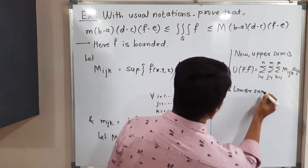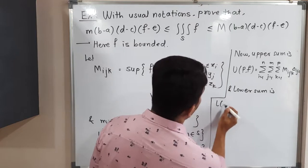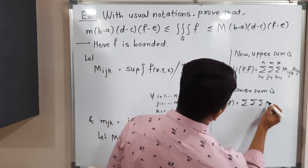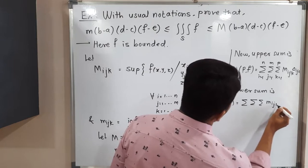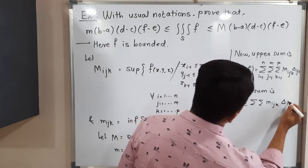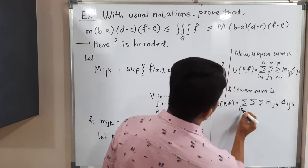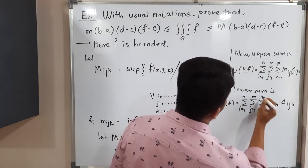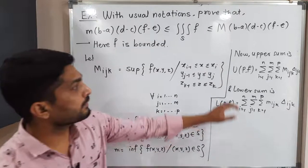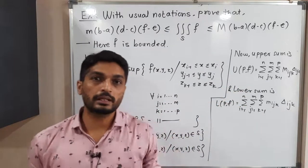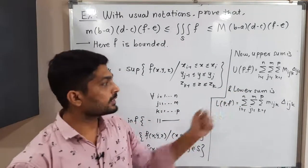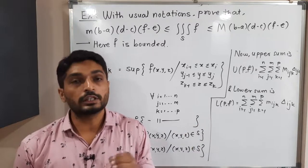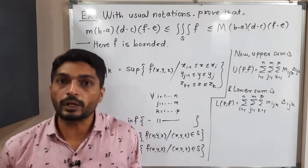The lower sum is denoted L(P,f) = Σ_i Σ_j Σ_k m_ijk · Δ_ijk, with i from 1 to n, j from 1 to m, and k from 1 to p. So in the upper sum we use capital M_ijk, and in the lower sum we use small m_ijk.